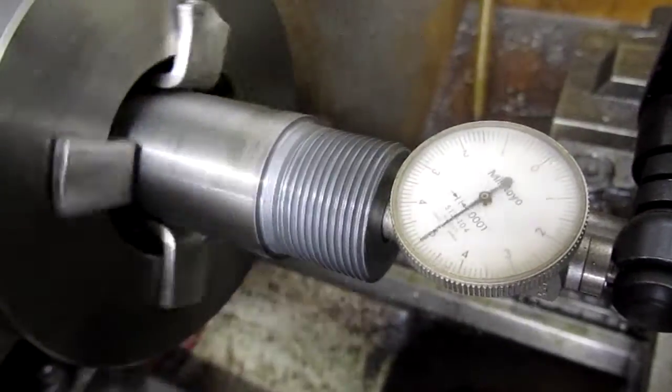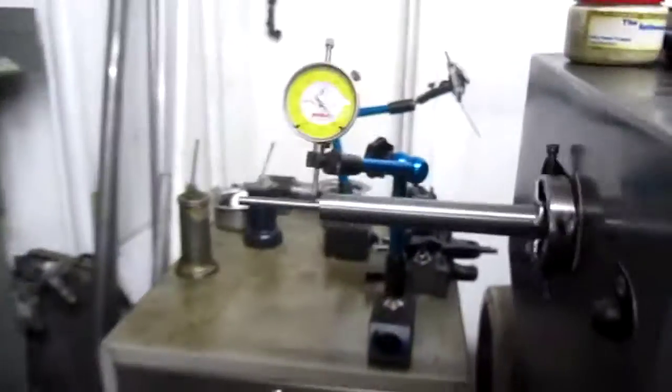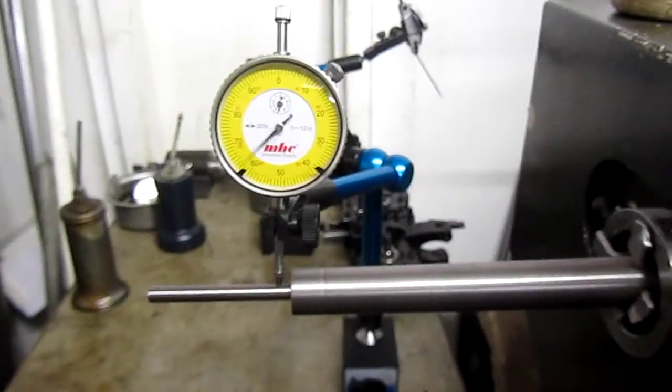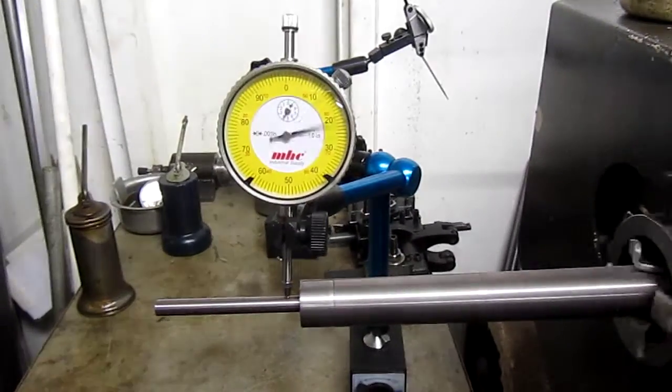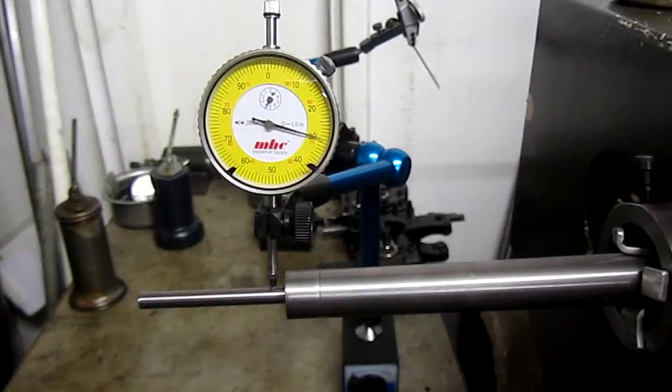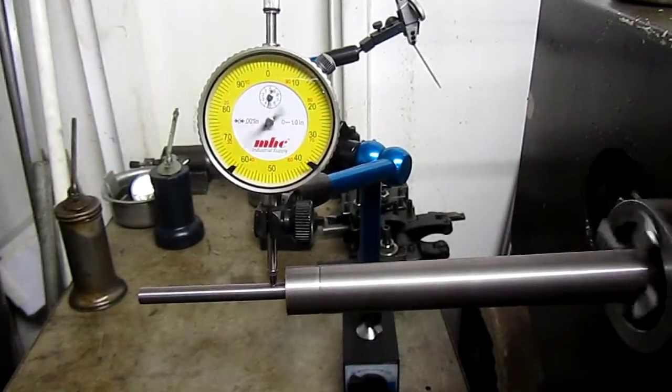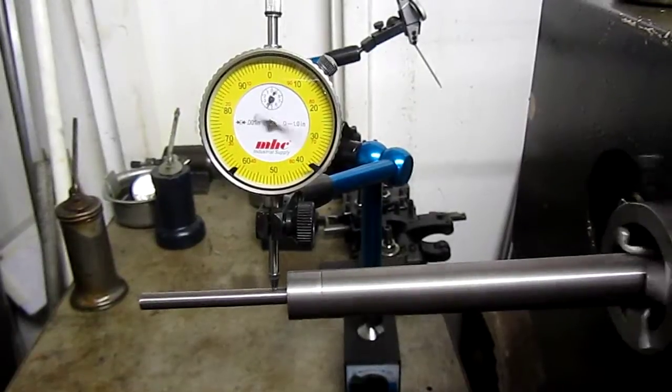But if we look on the muzzle side, we're getting about 75 thousandths of runout. I'll turn the lathe on. You can see how much muzzle runout there is.